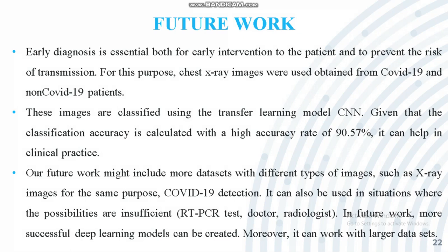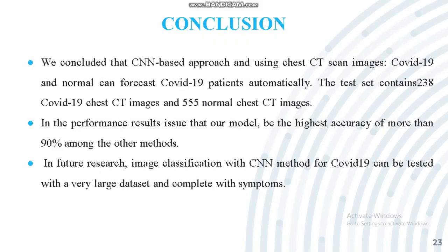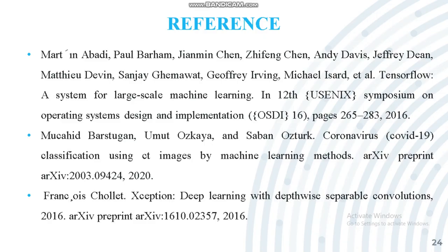For future work, we can include more datasets with different types of images such as X-ray images for COVID-19 detection, and this can also be used in situations where resources like RT-PCR tests and radiologists are insufficient. More successful deep learning models can be created, and the system can work with larger datasets. In conclusion, the test set contained 238 COVID-19 chest CT images and 555 normal chest CT images. In future research, image classification with the CNN model for COVID-19 can be tested with a very large dataset.